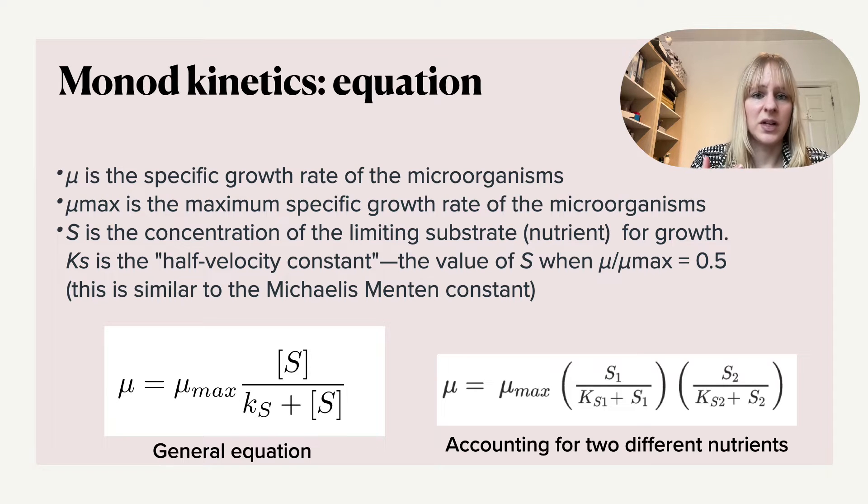Now in general in Monod kinetics you will only see that there's one limiting substrate, which is obviously in real life not necessarily the case because you might want to use different types of nutrients, but there are ways of how you can correct for that. So the equation that you see in the right will take into consideration two different nutrients.